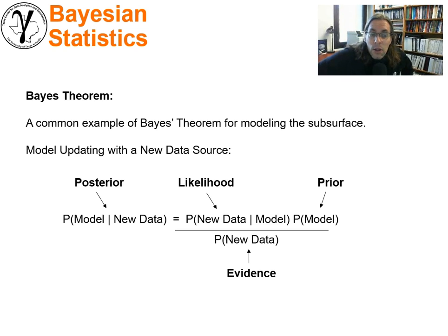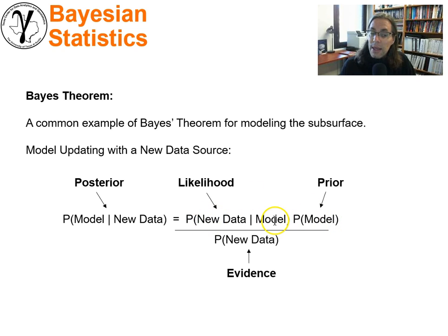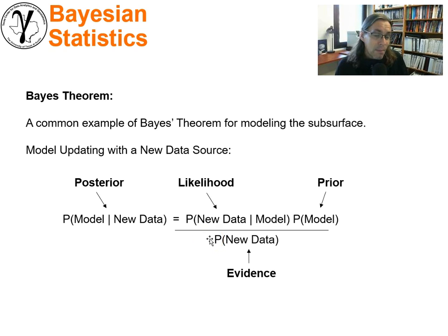I like to look at Bayes' theorem like this: it's the probability of the model given new data. We use the prior — the original understanding of the model — and the likelihood, the probability of the new data given the model. And we are dividing by a term that's really independent of the model, the evidence term. It is the probability of the new data.